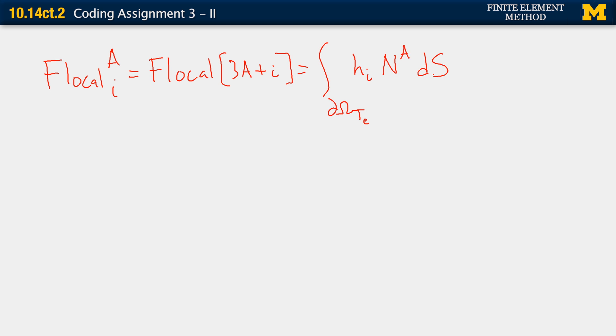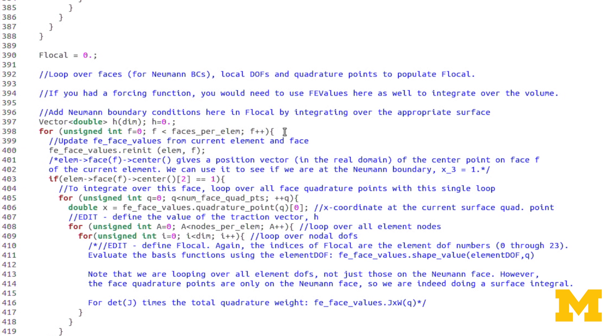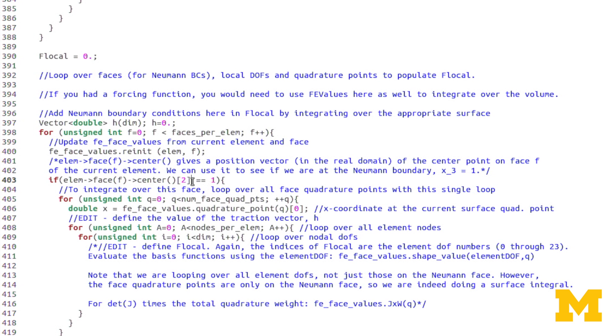So let's go back to the code. You'll notice first, I'm doing a loop over the faces of the element, the current element. Of course, there are six faces. So we loop over those, and we're going to update FE face values for this, not only this current element, but also for the current face. That will put the quadrature points on the face itself that we're on. Now we're going to check to see if that face is at our Neumann boundary. So this LM arrow face arrow center, that gives us a position vector at the center of the current face. And since I'm interested in the z component, I use square brackets too. So here in this if statement, I'm checking to see, is the point at the center of this face at the boundary z equals 1, which is our Neumann boundary?